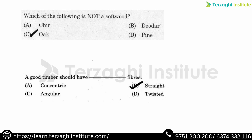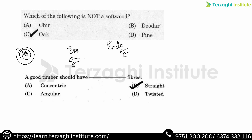Trees are classified as exogenous and endogenous. Exogenous means trees grow outward; endogenous means inward growth. Annular rings are visible in the horizontal cross-section and longitudinal section of exogenous trees. There are different types of timber: softwood and hardwood come from exogenous and endogenous trees respectively.